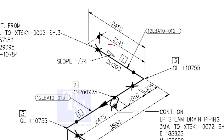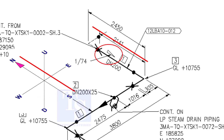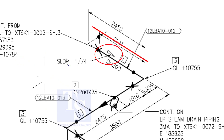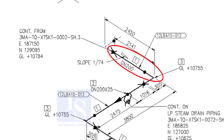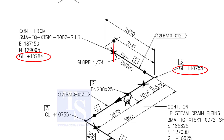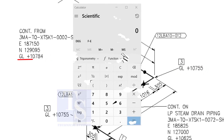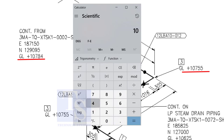According to the symbol, the line slopes towards the south. Let us check the slope of this particular part of the piping. This is the higher point and this is the lower point. 10,784 minus 10,755 equals 29 millimeters.